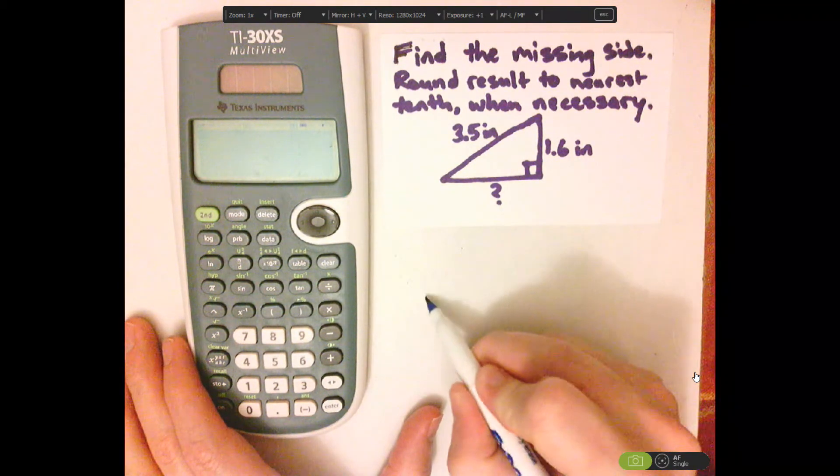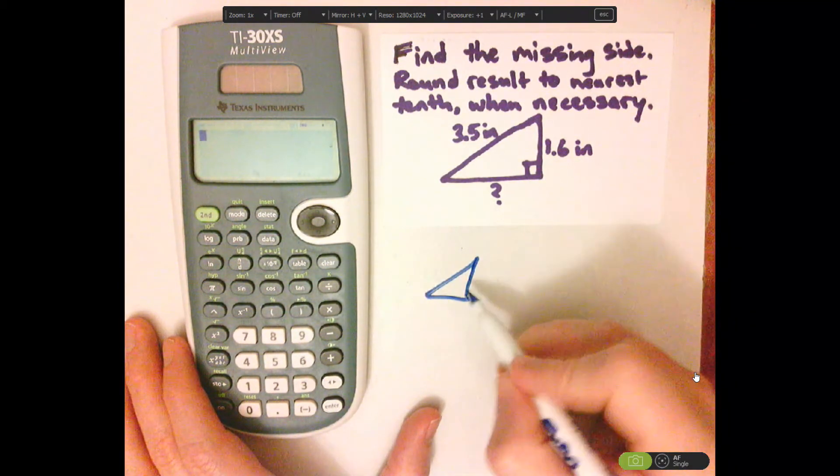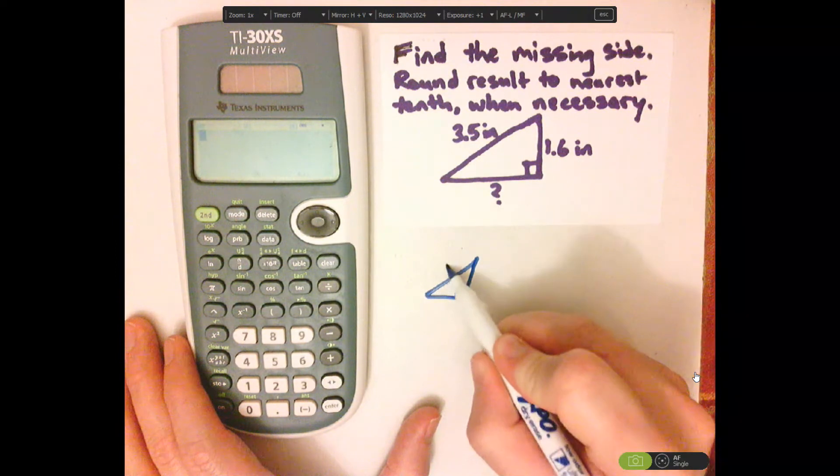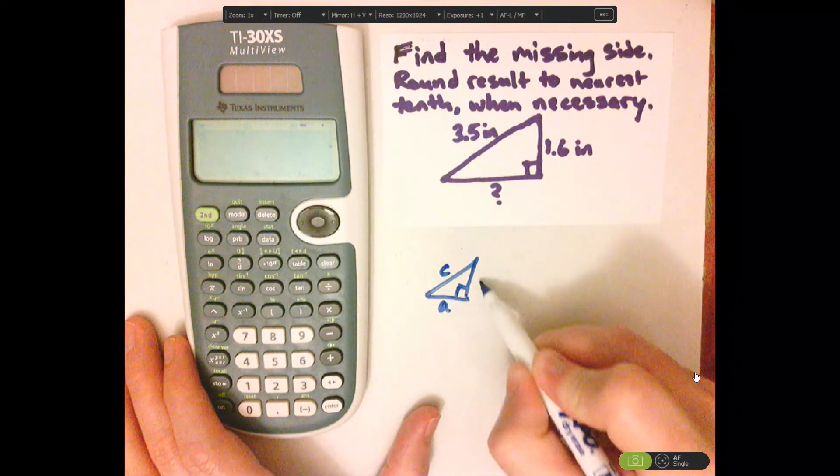Just a reminder, Pythagorean Theorem: you have a right triangle, that's 90 degrees. That's C, that's A, that's B.